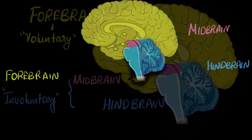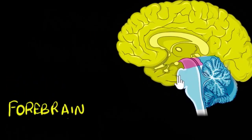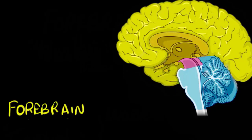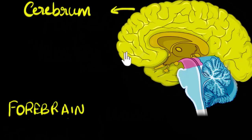Let's zoom out a bit and look at the forebrain in more detail. If you look at the forebrain, you can see two sections: the outer section, which contains a lot of folds, and the inner section. This big outer section is called the cerebrum — the entire outer section colored in light yellow is the cerebrum. We won't look at further parts of that.